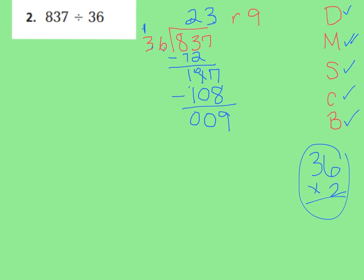So my quotient is 23 remainder 9. And remember, you can always check it by multiplying 23 times 36 and then adding your remainder of 9 to see if it equals 837.